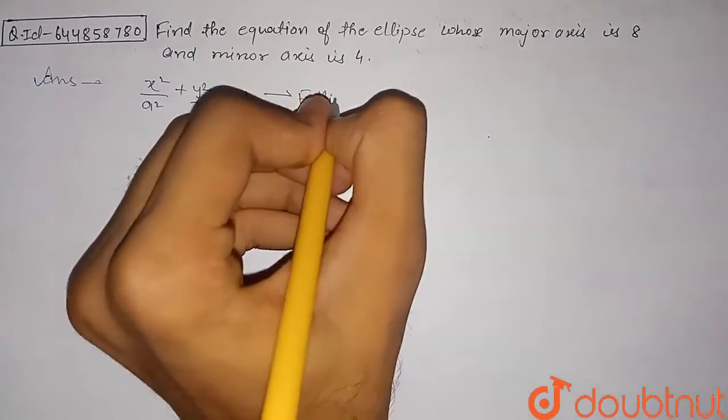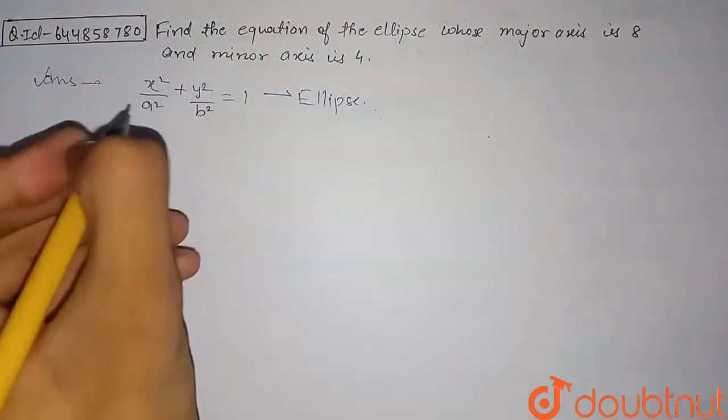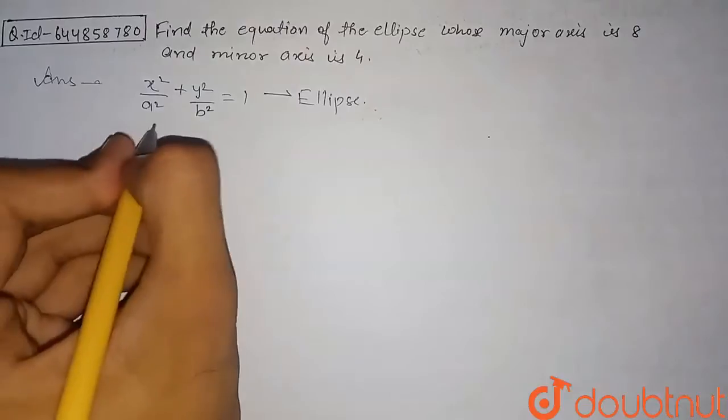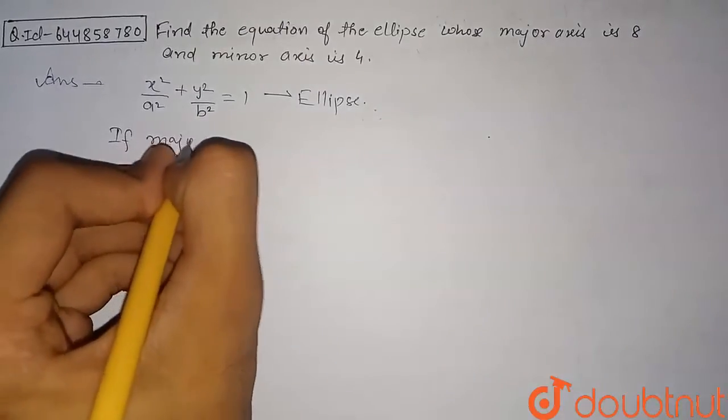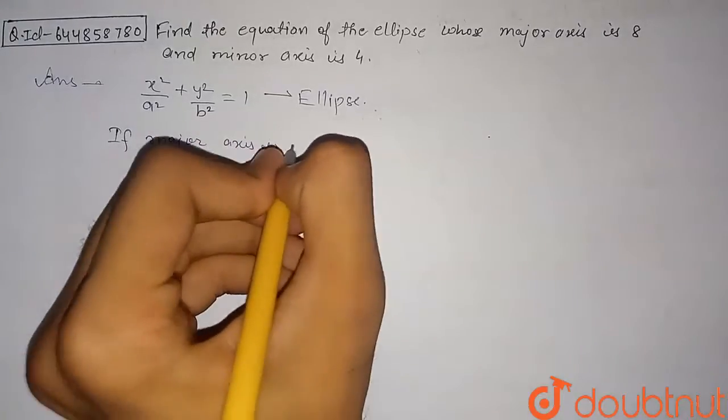For this ellipse, if the major axis is along the x-axis, then the length of the major axis will be 2a, equal to the major axis.